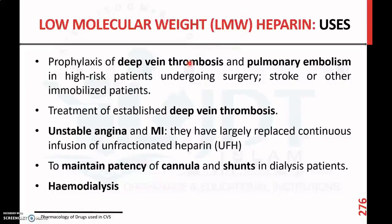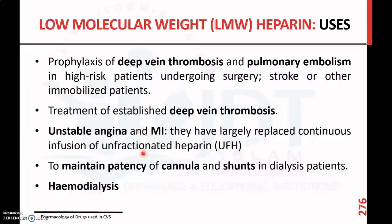Uses of low molecular weight heparin include prophylaxis of deep vein thrombosis and pulmonary embolism in high-risk patients undergoing surgery, stroke patients, or other immobilized patients. It is also used for treatment of established deep vein thrombosis, and in unstable angina and myocardial infarction it has largely replaced continuous infusion of unfractionated heparin. It is also used to maintain patency of cannula and shunts in dialysis patients and hemodialysis.